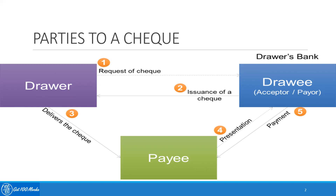When that particular person or company receives the check from the drawer, they can present it to the drawer's bank for getting the payment, and the bank is supposed to make the payment on behalf of the drawer to the payee. This is how the whole process goes in the payment of a check.